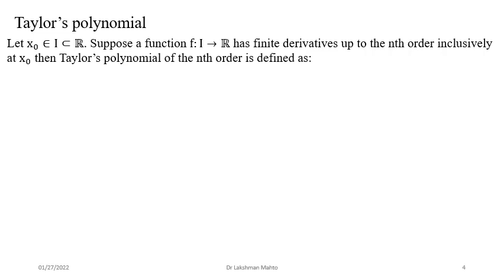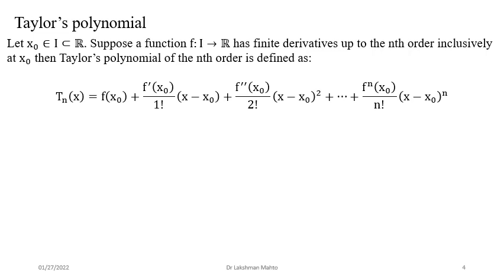Suppose a function is defined from the interval I to ℝ and has finite derivatives up to nth order at x₀. Since it is locally defined — just as limits and continuity are local concepts — we can then define Taylor's polynomial of nth order. Taylor's polynomial of the given function f in the small neighborhood of x₀ is defined as: Tₙ(x) = f(x₀) + f'(x₀)·(x − x₀)/1! + f''(x₀)·(x − x₀)²/2! + ... up to the nth term.